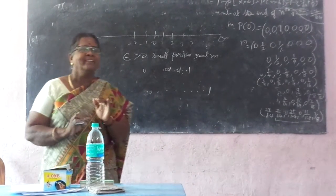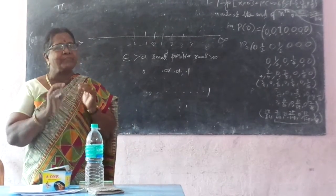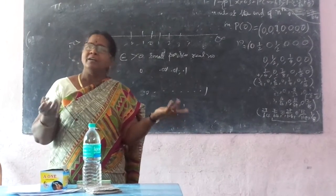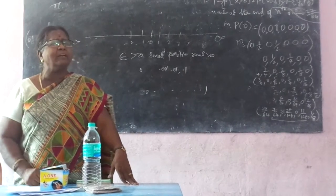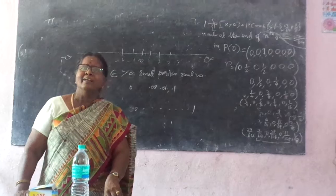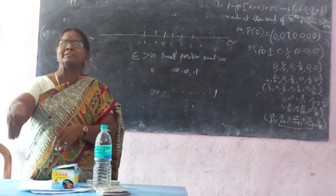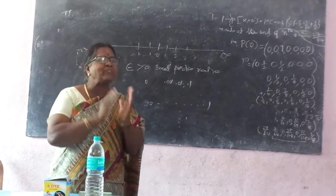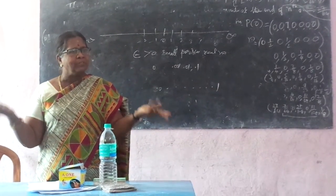Have you ever thought about it this way? Now you all understand what is the meaning of epsilon — a small positive number. Because real numbers are uncountable; nobody can pick the number next to zero. Next to one, can you say what the real number is? 1.1, 1.01, 1.001, 1.000001 — then another person will add a zero. So, we can't say what is the number next to any real number. Therefore, you cannot define it. So, we say it is uncountable.